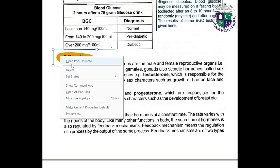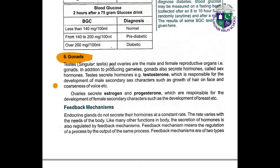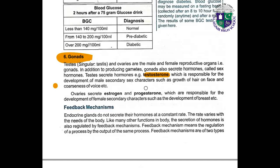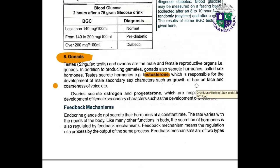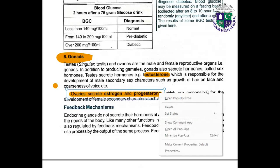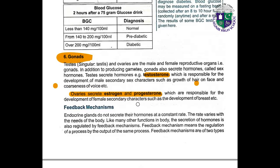Number six: gonads. Testes and ovaries are the male and female reproductive organs (gonads). In addition to producing gametes, gonads also secrete hormones called sex hormones. Testes secrete testosterone, which is responsible for the development of male secondary sex characteristics such as growth of hair on the face and coarseness of voice. Ovaries secrete estrogen and progesterone, which are responsible for the development of female secondary characteristics such as development of breasts.